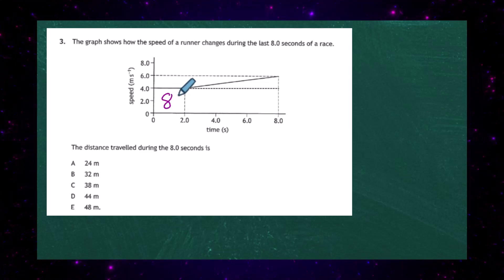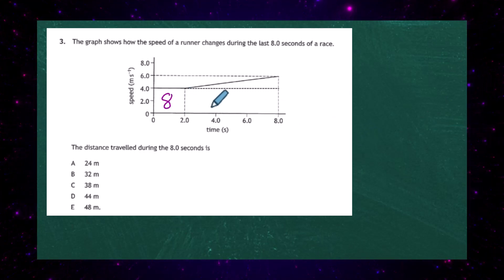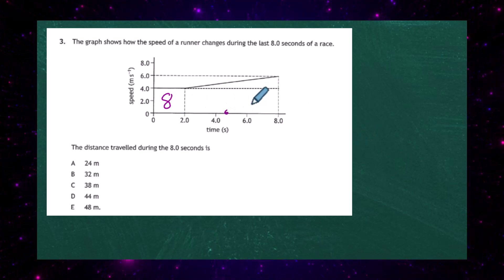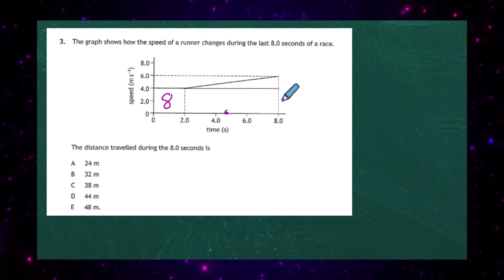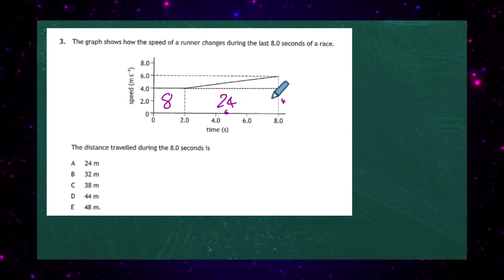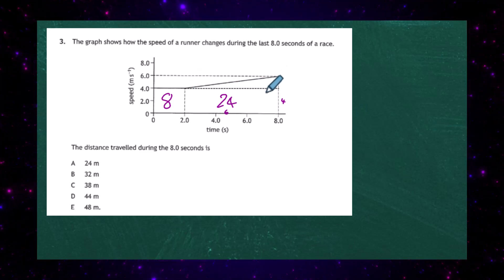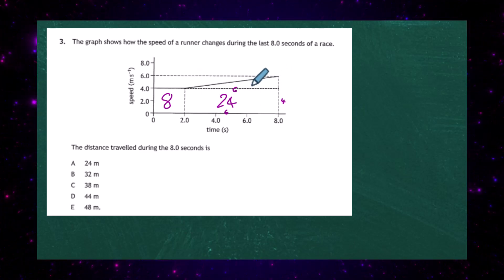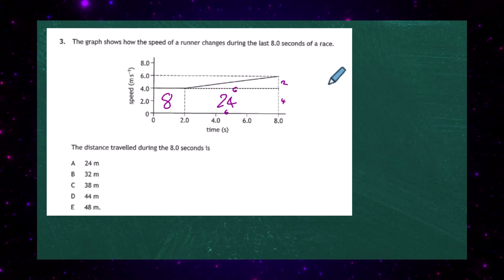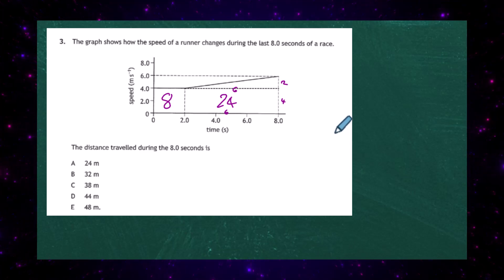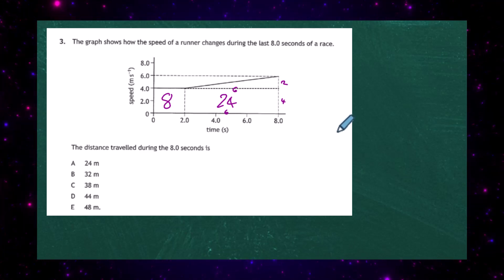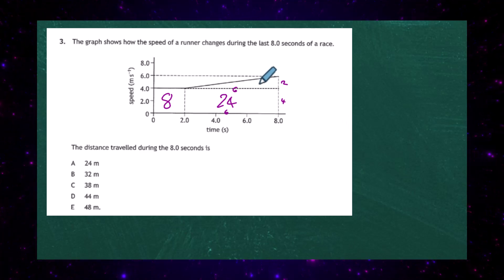The first rectangle is 2 along and 4 up, giving an area of 8 units. The longer rectangle runs from 4 to 8 seconds — that's 6 along and 4 up — giving an area of 24 units. For the triangle, the base is 6 and the height goes from 4 to 6, which is 2, so the area is one half times 6 times 2.